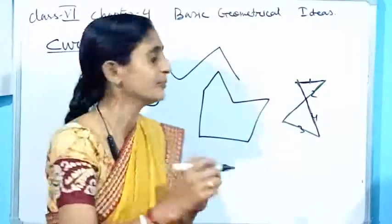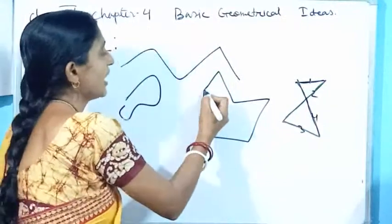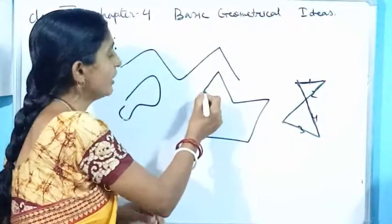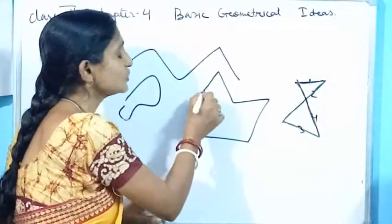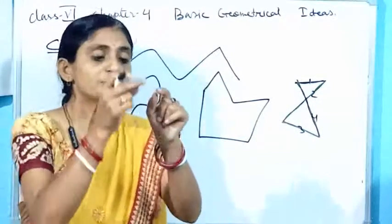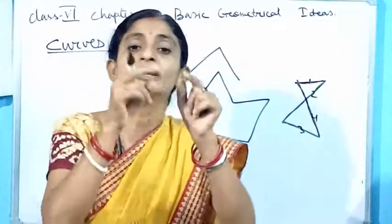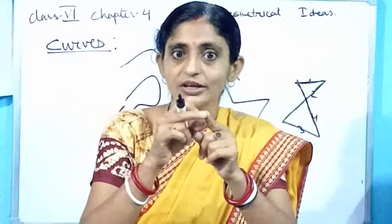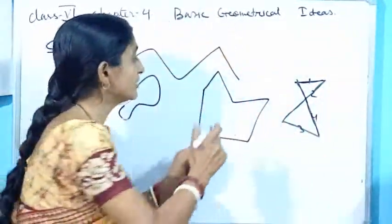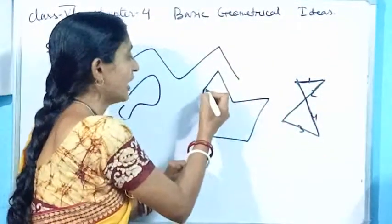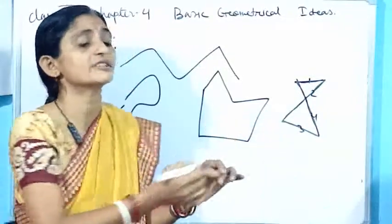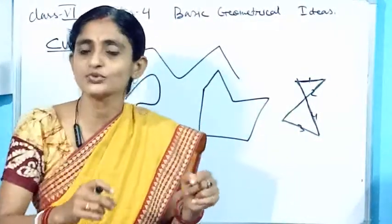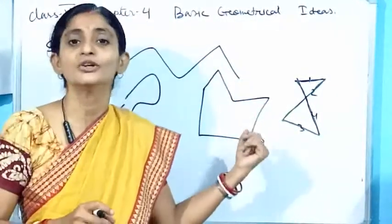And one more thing you have noticed: I have started from here — this is the beginning point — and this is also the ending point. When the beginning point and ending point join together, that means we are completing the drawing, and this one will be called a closed curve.